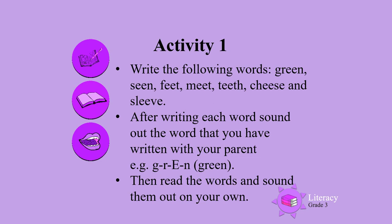Before you write the next word, sound out the word that you've just written with your parents. For example, g-r-ee-n. Green. And there you can see that the ee and the ee — those two e's — make the sound ee. Then read the words and sound them out on your own.